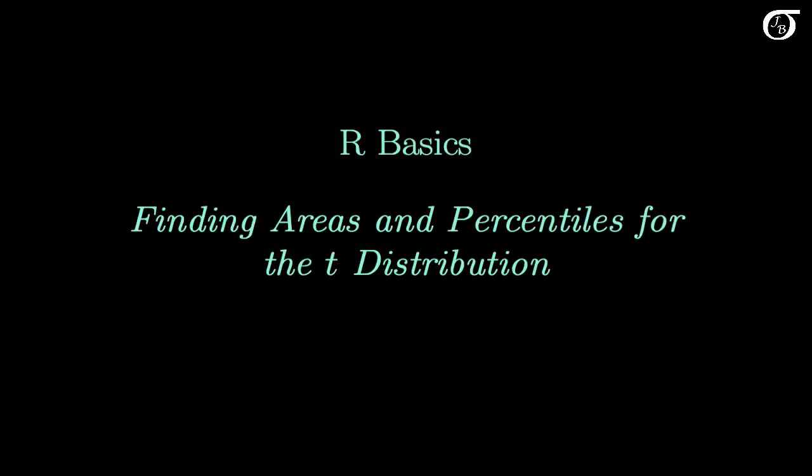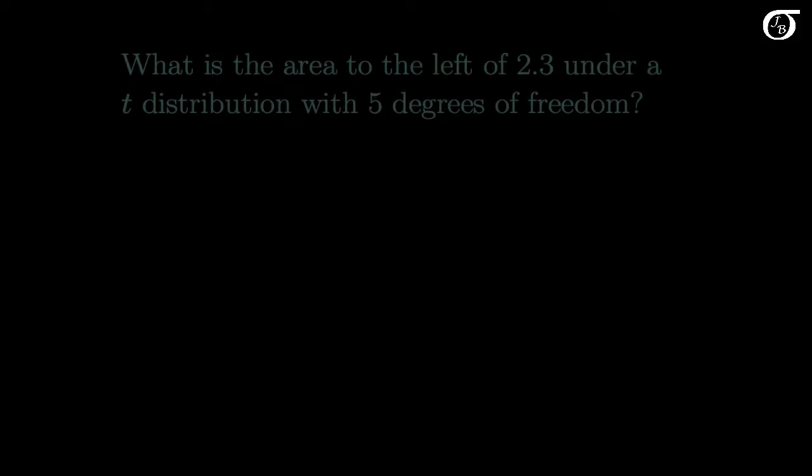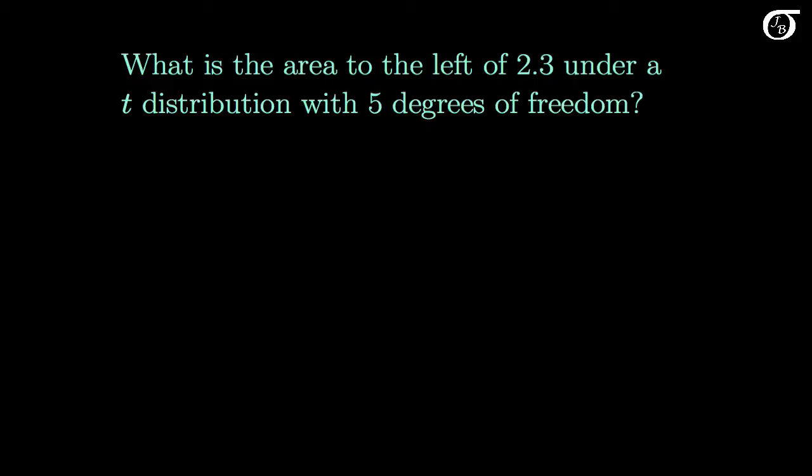Let's take a quick look at finding areas and percentiles for the t-distribution using R. Suppose we want to find the area to the left of 2.3 under a t-distribution with 5 degrees of freedom.